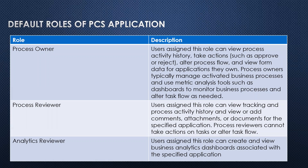Each role has different responsibilities. There are three roles by default: process owner, process reviewer, and analytics reviewer. The user assigned to the process owner role can view process activity history, take actions like approve or reject tasks, alter the process flow, and view form data for applications they own. Process owner typically manages activated business processes and uses metric analytics tools such as dashboards to monitor business processes and alter task flow as needed.